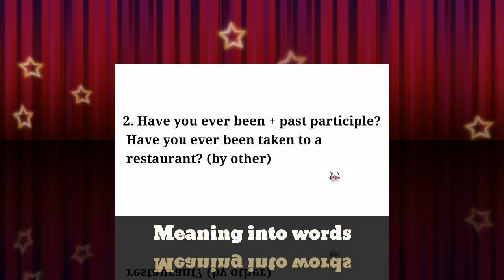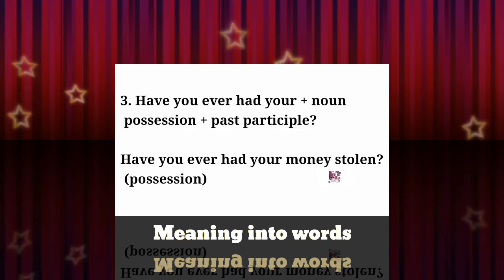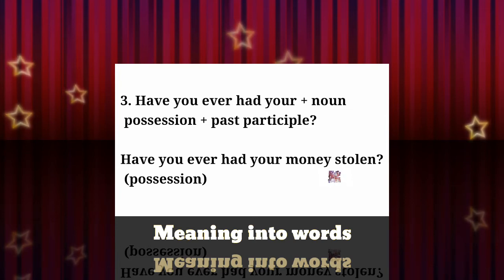For example, 'Have you ever been taken to a restaurant by others?' If you have been taken by others, then you use this structure. Number three: 'Have you ever had your noun + past participle?' For example, 'Have you ever had your mobile money stolen?' This structure is used in the possessive case.